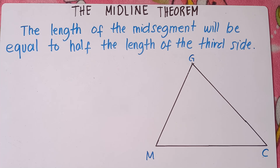The midline theorem states that the length of the midsegment will be equal to half of the length of the third side. To fully understand this, let's discuss the midline theorem.